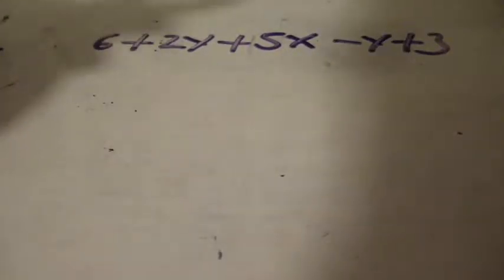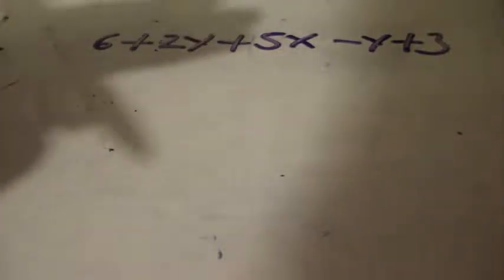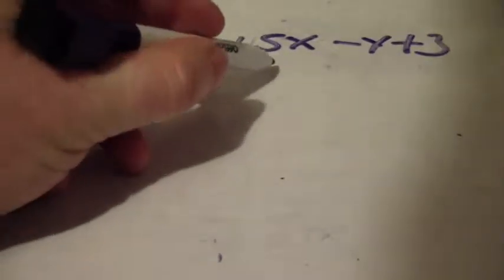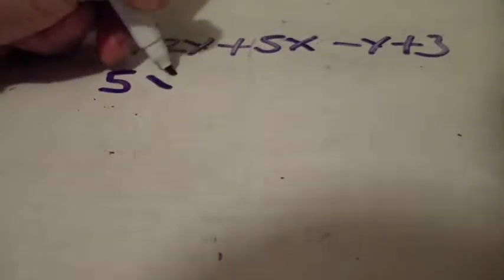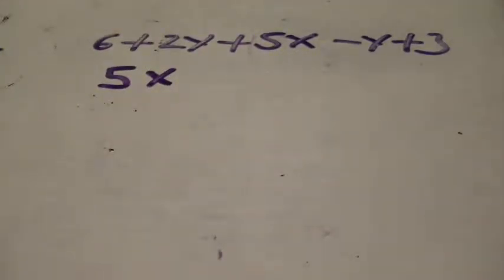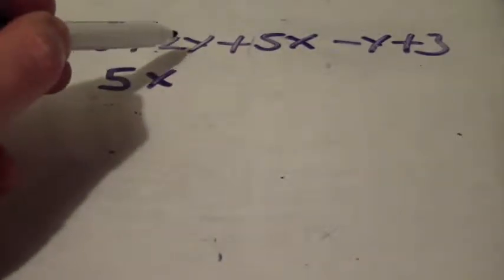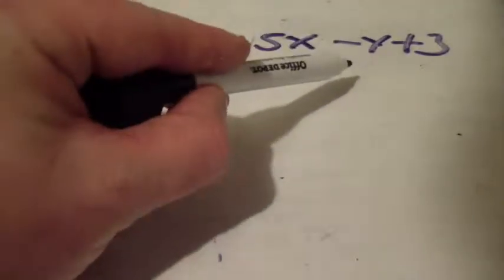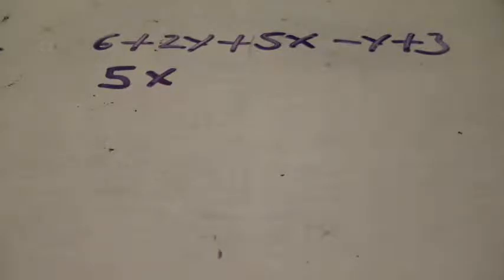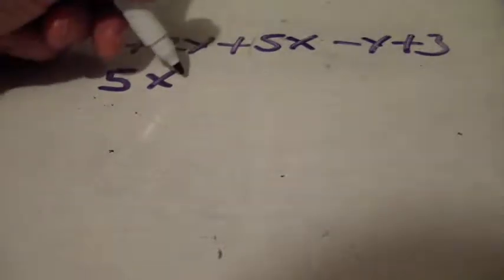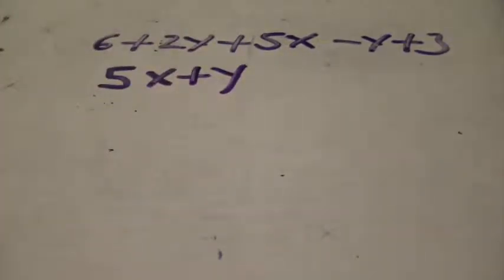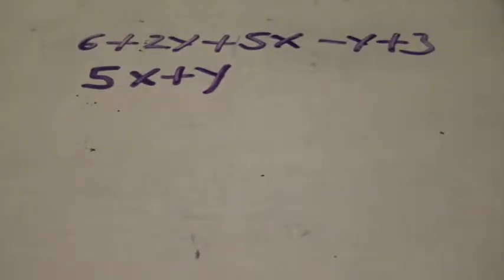So we're going to simply do that now. They always like to have your x's be the first term, your y's be the second term, and your constants be the third term. We have an x here. We look and see if there's any other x's. We notice there's no other x's. So we simply just bring that down here. We say that's 5x. Now we look for the y's because we always do the y second. We see we have a 2y here and then we see a minus y. So that simply means you do subtraction. 2y minus a y is simply a y. So we put plus y.